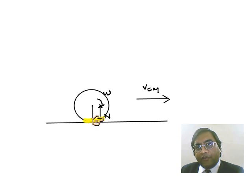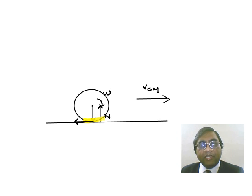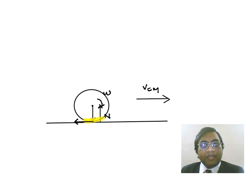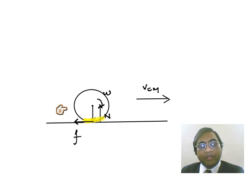Due to the deformation there are stresses, and there is a frictional force acting in this manner. This is not static, this is not kinetic, though there may be some slipping involved as well due to the deformation. This is the frictional force of deformation, which is called rolling friction. Rolling friction acts in the left side direction. The center of mass is moving in the right side direction, so it is this friction which decreases VCM.